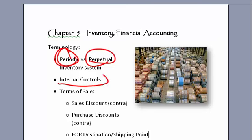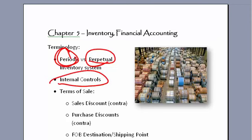The next item is Internal Controls, and there's a whole set we're going to talk about later, so we'll wait a few minutes until we hit that section. Internal Controls are important for maintaining the accuracy of our documents, records, numbers, etc.